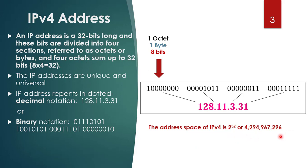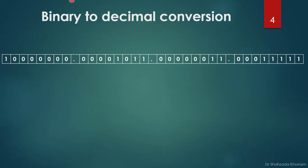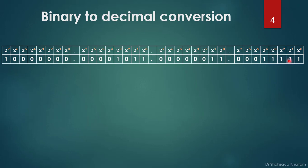Let's start with the conversion of a binary address to decimal. I'm going to represent a 32-bit binary address — each section is one byte, totaling 4 octets and 32 bits. We use powers of 2 for every bit to convert to decimal.